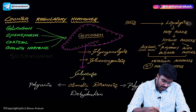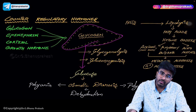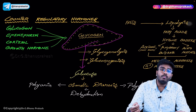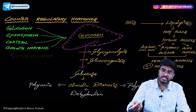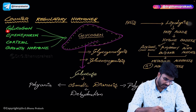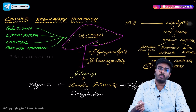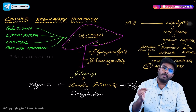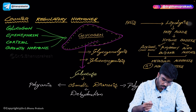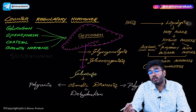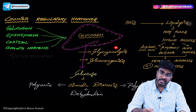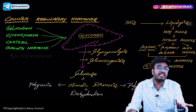All these counter-regulatory hormones act on the liver where glycogen is stored. Whenever these hormones act on the liver, glycogen is broken down into glucose — that process is called glycogenolysis. So glycogenolysis automatically happens whenever these hormones act on the liver. And not only glycogenolysis, but gluconeogenesis is also happening. Because even after glycogenolysis, glucose is produced but the tissues cannot utilize it.